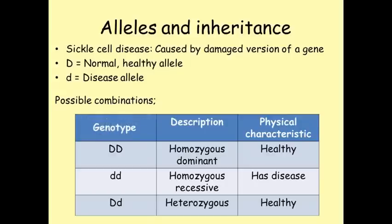Genotype means the combination of alleles that someone actually has. The other way of looking at it is to see what a person's physical characteristics are like — in other words, do they have the disease or are they healthy? This is called the phenotype. In our example, being homozygous for the healthy allele produces the same phenotype as being heterozygous, because only the dominant allele — the healthy allele — is expressed. You need two copies of a recessive allele to express that trait.